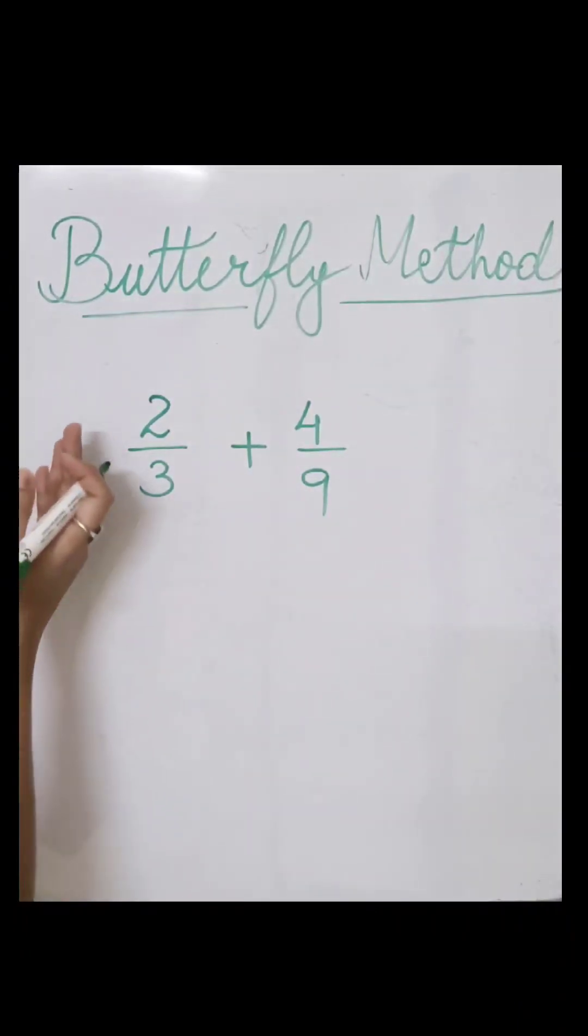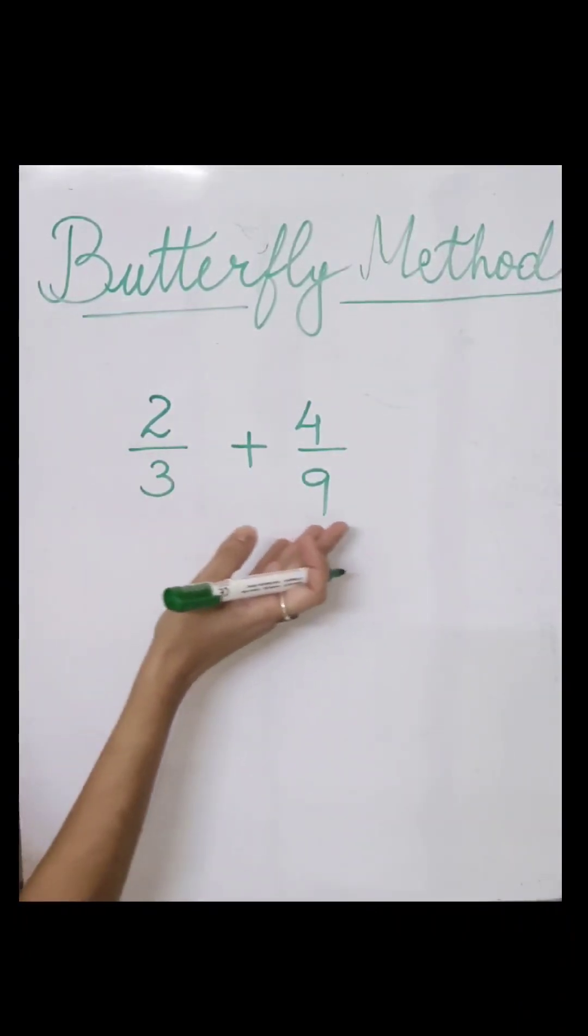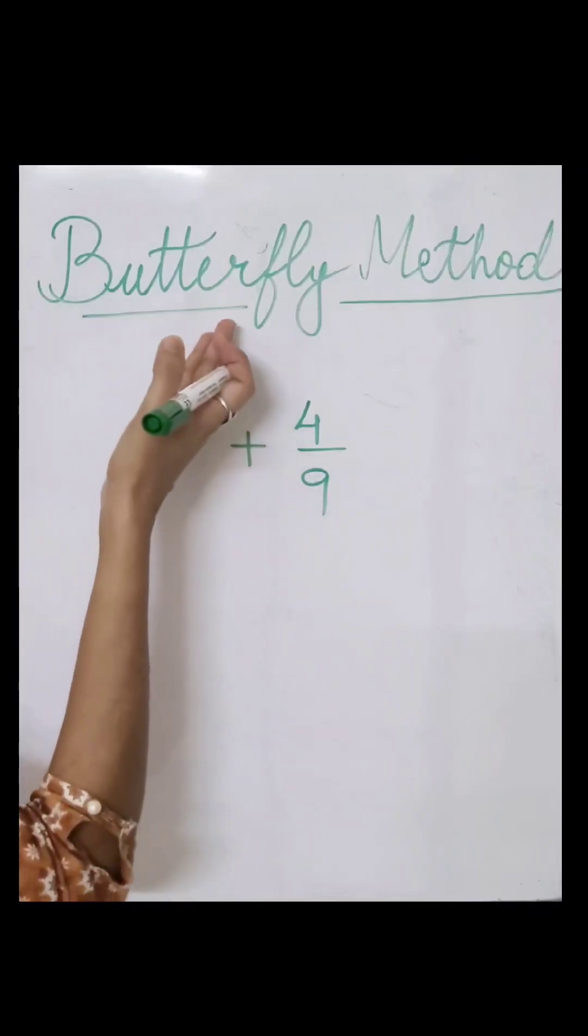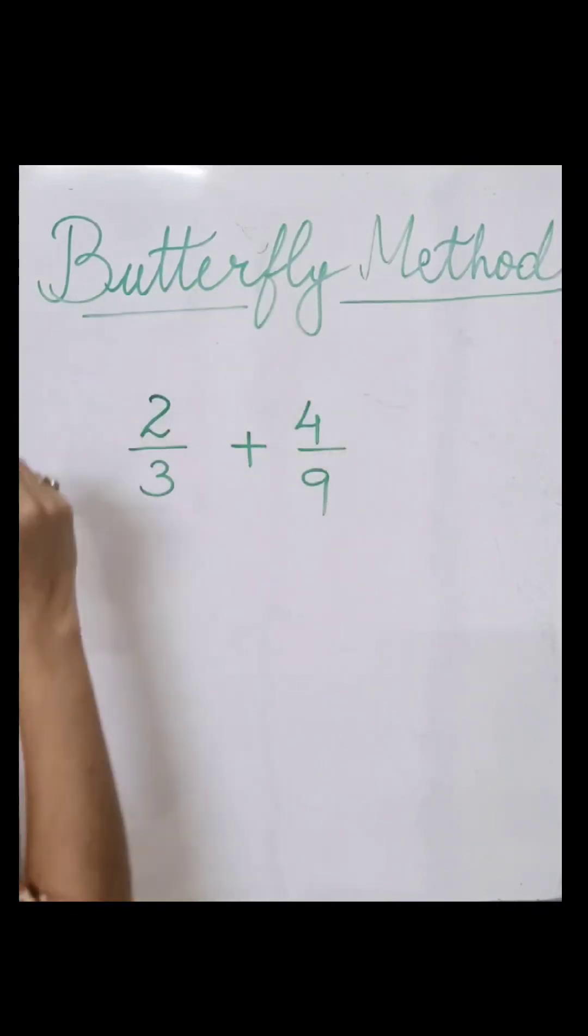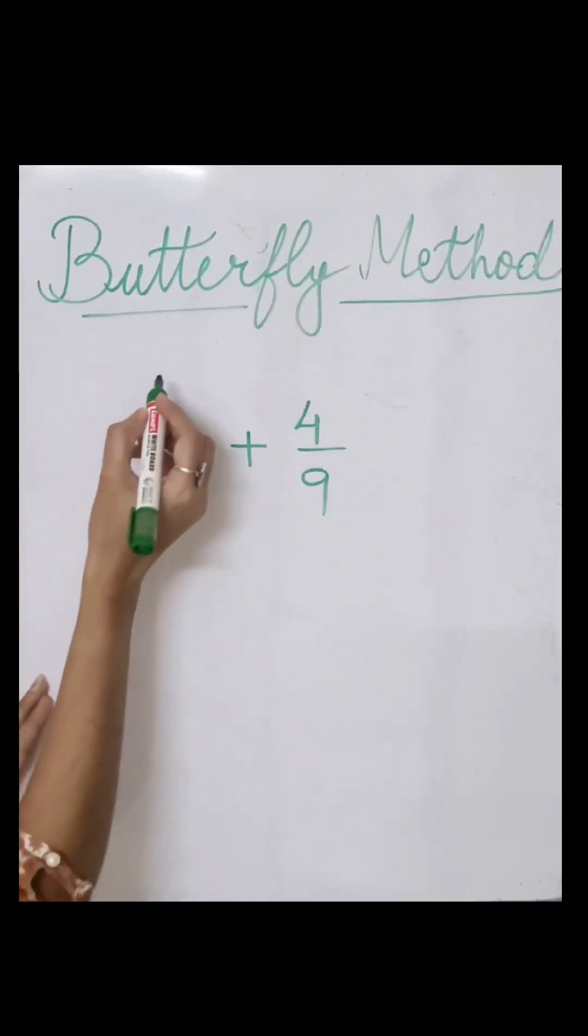Hello everyone, let's unlock a new method to add two fractions, known as the butterfly method. How do we add under this method?